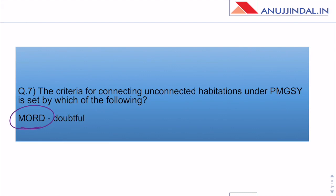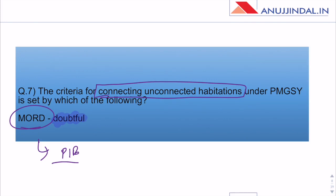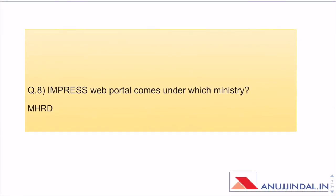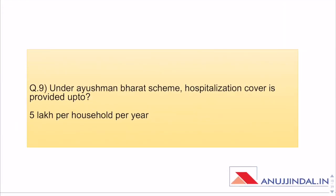Criteria for connecting unconnected habitations under PMGSY is set by which of the following? The answer is Ministry of Rural Development. PIB clearly states that MORD is the implementing body of PMGSY, and the objectives of connecting unconnected habitations fall under that implementing ministry. So it should be Ministry of Rural Development.